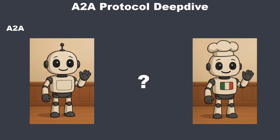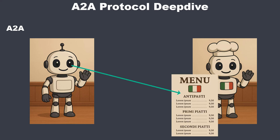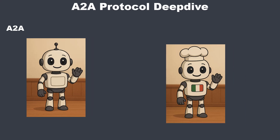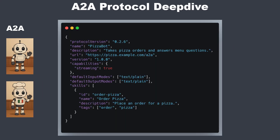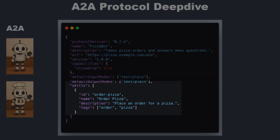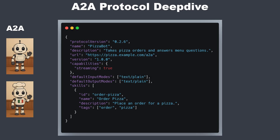But how does the customer's agent know what it can order from the restaurant's agent and how to address it? It needs the menu and the house rules, so to speak. And in A2A, that is the agent card. So the client agent fetches the restaurant agent's agent card. This is a JSON file that describes everything that is important: what's the agent's name, how do I need to authenticate using HTTP headers, and most importantly, what are its skills.